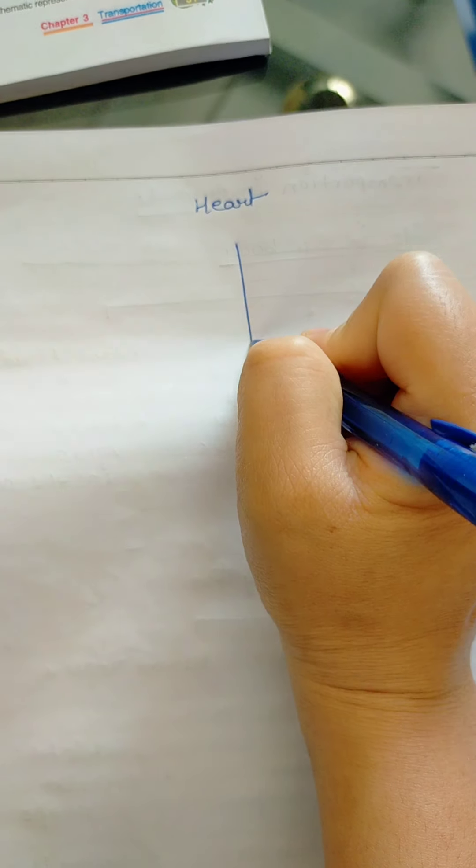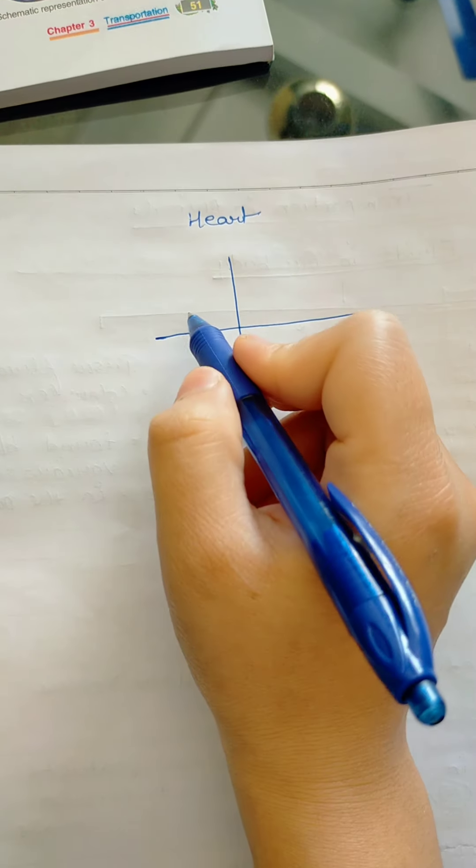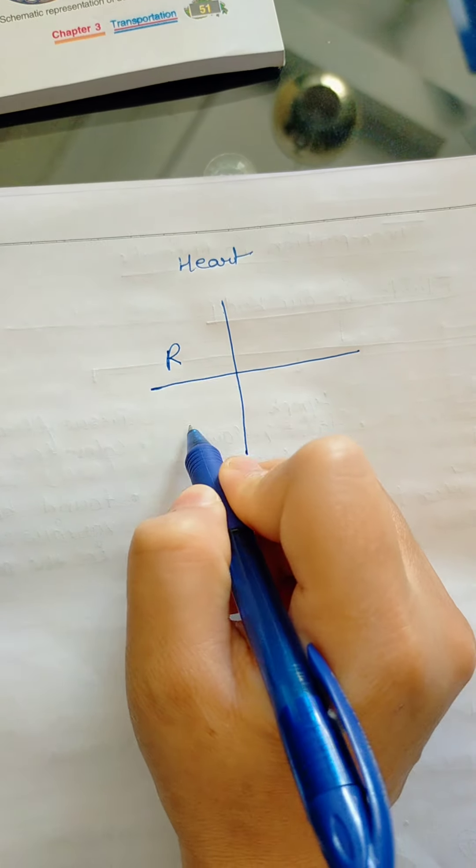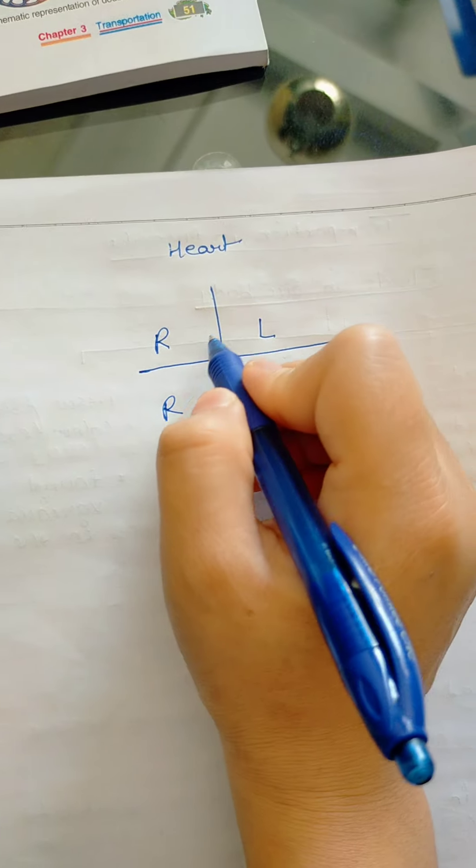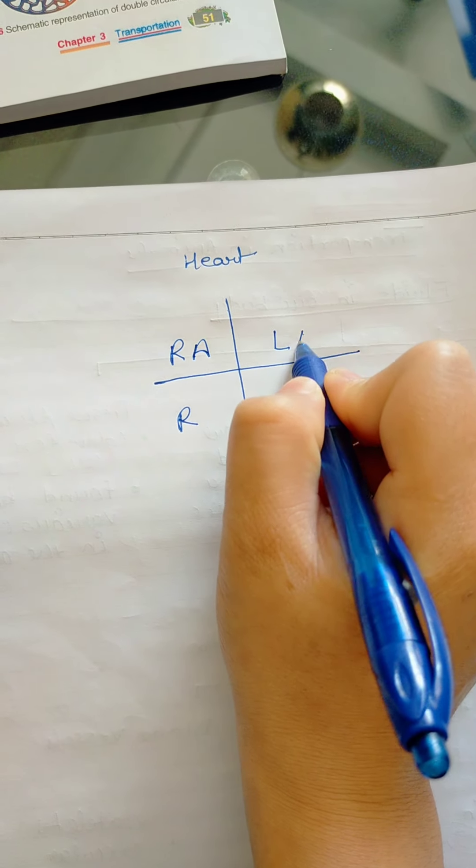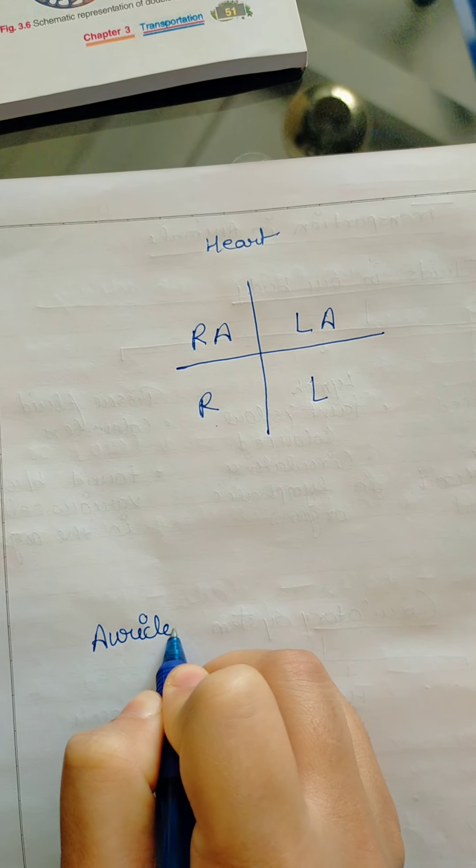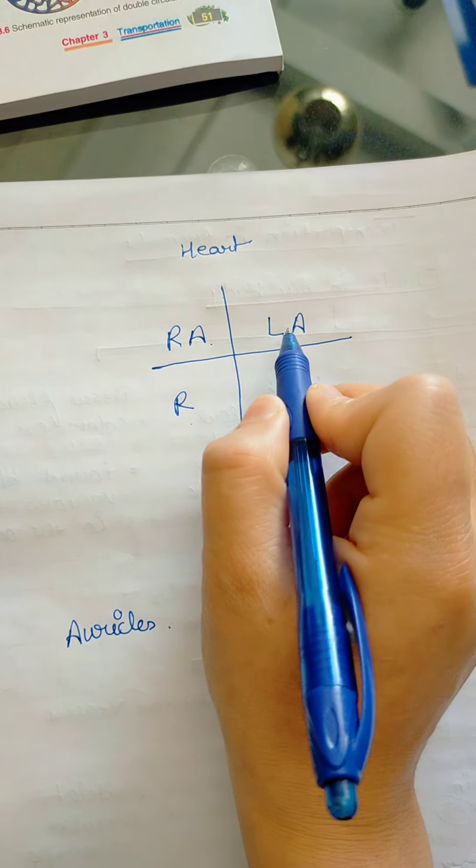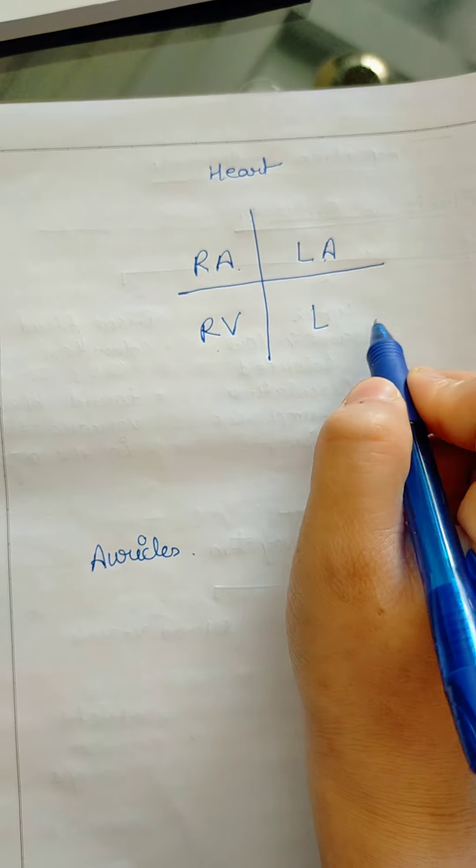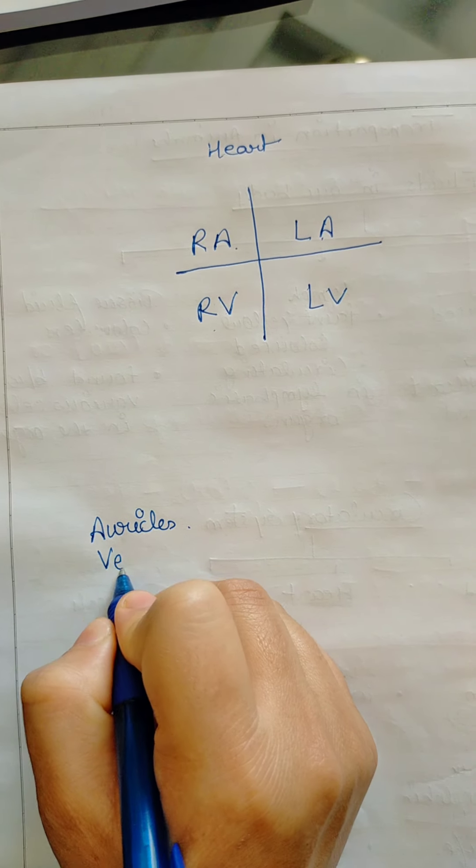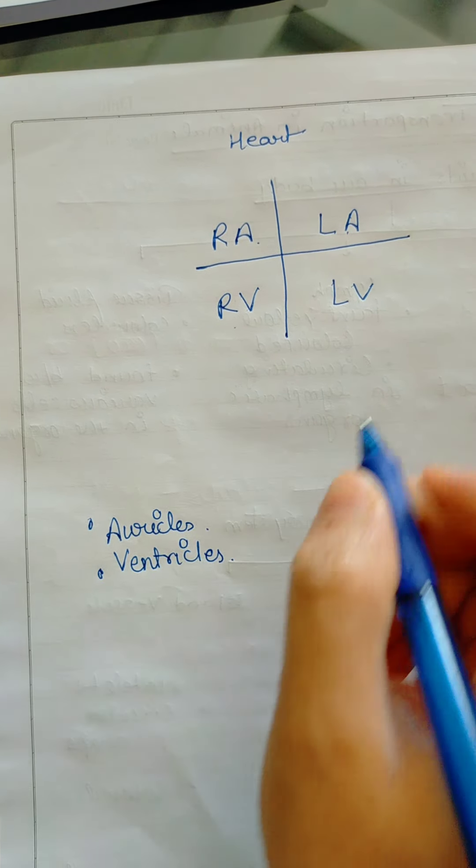the heart is basically four-chambered heart. If I see this is the right side, these are both right sides. And this is the left side. These are both left sides. The upper chambers are called atria, they are the atria. So this is the right atria, and this is the left atria. The lower chambers are the ventricles. So RV and LV, that is the ventricles. Heart.